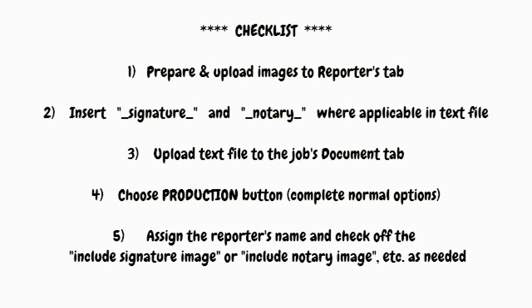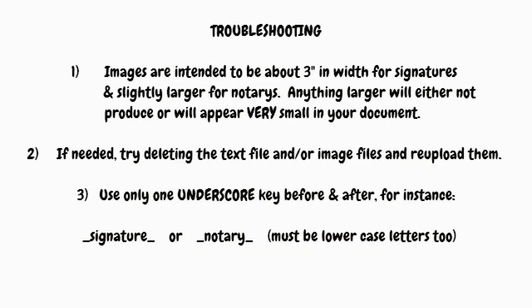If you have any trouble, here is some troubleshooting. Your images have to be a fairly similar size — about three inches in width for signatures and slightly larger for some notaries. Anything larger than that is either not going to produce or it's going to appear very small in your document. You can work with that a little bit — if you need to, just delete your text file or your image files and re-upload them, as sometimes that will cure the problem. Also, be sure to use only one underscore before and after, and all lowercase letters, when you're doing signatures and notaries in your text file.